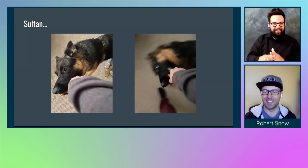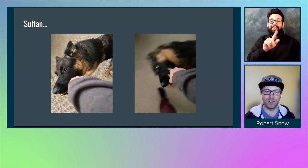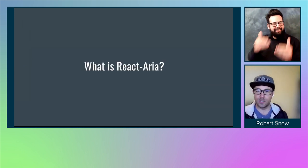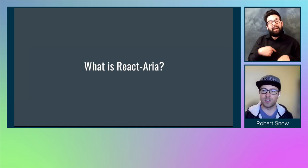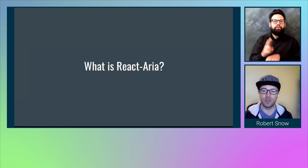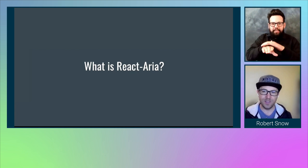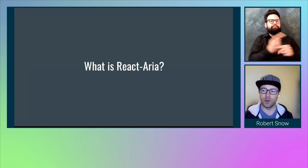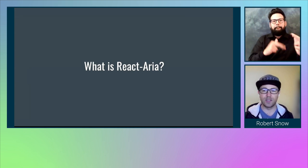So much like Sultan's absolute focus on his toy in that first photo, let's get to it. I mentioned that React Spectrum is built on top of hooks that handle all the accessibility attributes and behaviors for our components. These hooks are published separately to our component library, and we use them to build all of our components. These libraries are called React ARIA and React Stately, and we'll be focusing on React ARIA today.